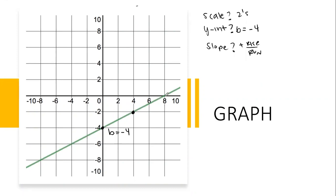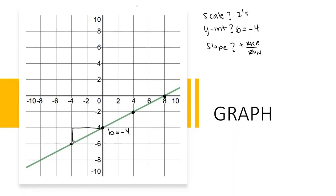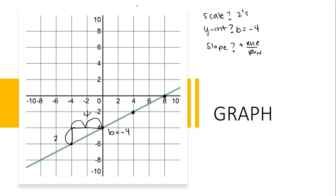I need to find another point on my graph. When I look for a point, I look where it goes perfectly in the middle of those little cross sections. Remember, because the scale is going by twos, when I do my rise over run I have to count by two. So it's rising how much? Two. And running how much? Four. My rise over run is positive two fourths, which reduces to one half.